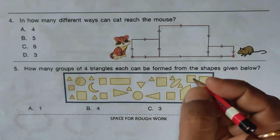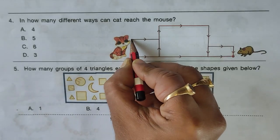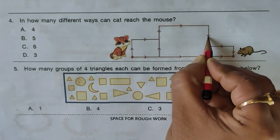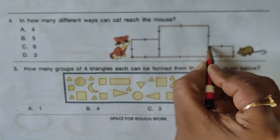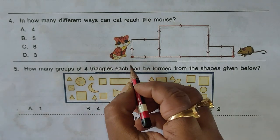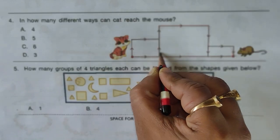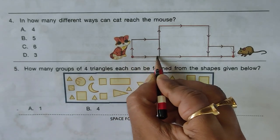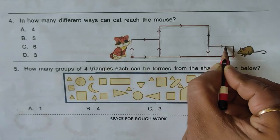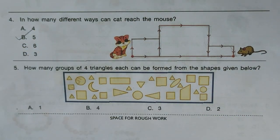Next question: in how many different ways can the cat reach the mouse? Following the paths: route one goes straight; route two diverts midway; route three starts from the lower path; route four diverts at a junction; and route five starts and then diverts further along. There are five routes total. Option B is the right answer.